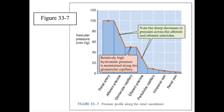In contrast, a selective increase of efferent arteriolar resistance causes a steep increase in glomerular capillary pressure but also a decrease in renal plasma flow. As a result, over the lower range of resistances, glomerular filtration rate increases with efferent resistance as the increasing glomerular capillary hydrostatic pressure dominates.